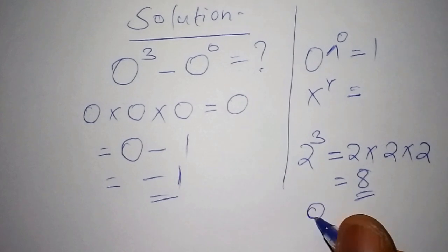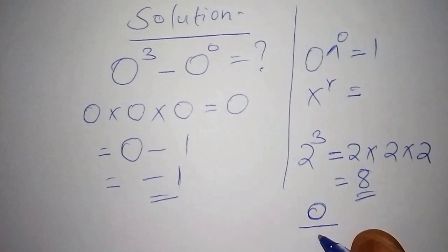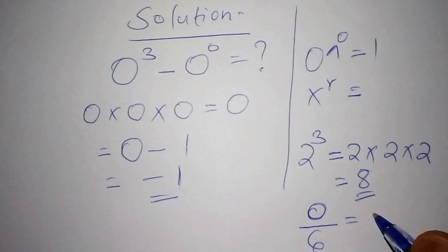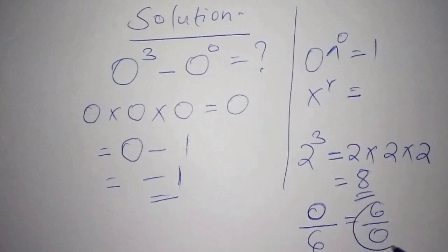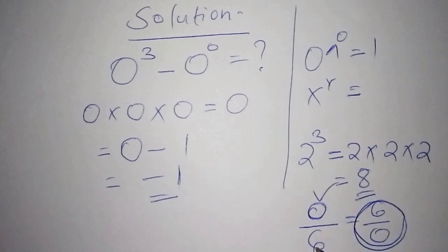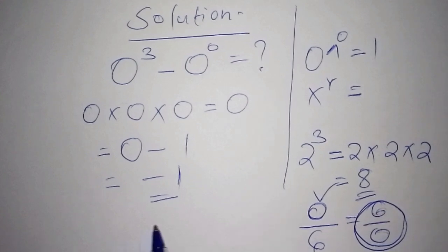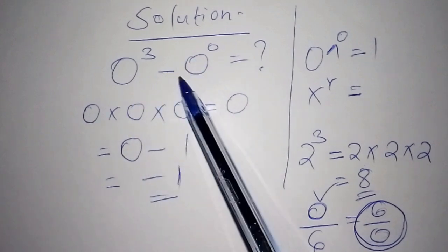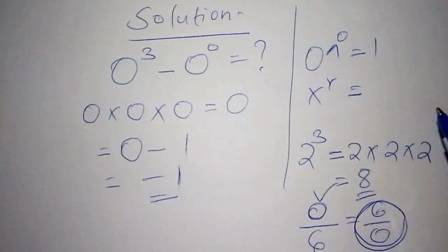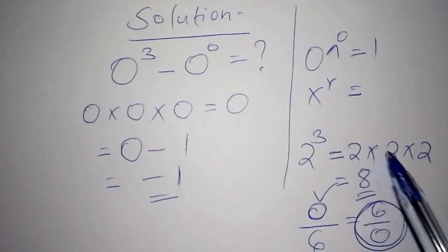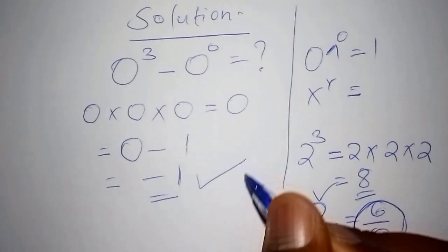In basic maths, we can have 0 divided by 6 — that is fine. But we cannot have 6 divided by 0, because that is undefined. That is why some argue that 0 to the power of 0 is also unrealistic, making the whole expression undefined. That is why we say the answer is either negative 1 or undefined.